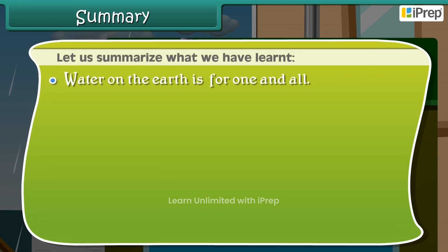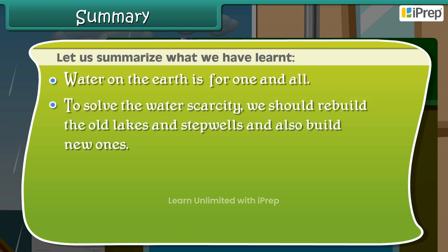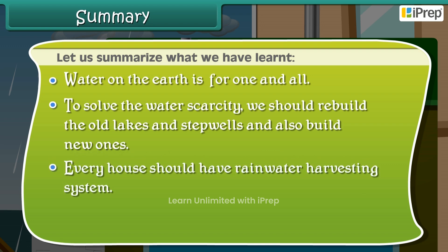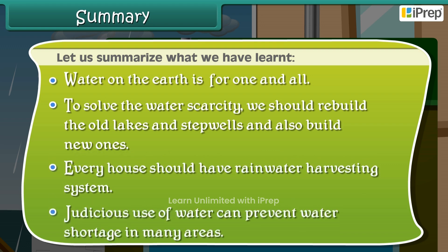Water on the earth is for one and all. To solve water scarcity, we should rebuild old lakes and step wells and also build new ones. Every house should have a rainwater harvesting system. Judicious use of water can prevent water shortage in many areas.